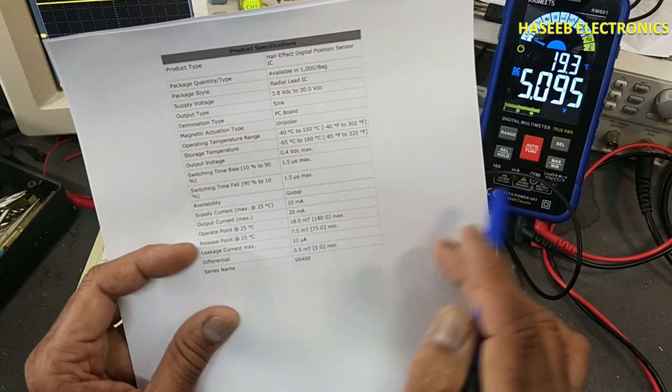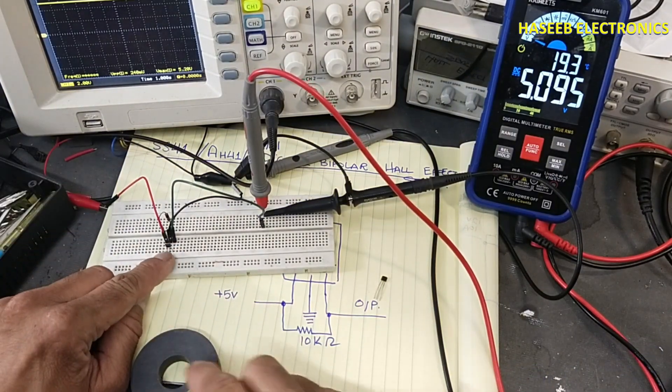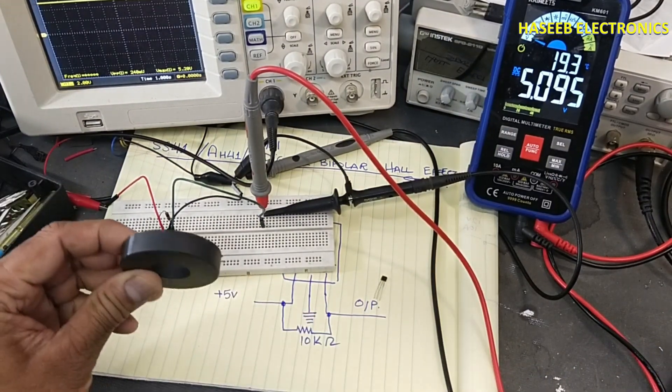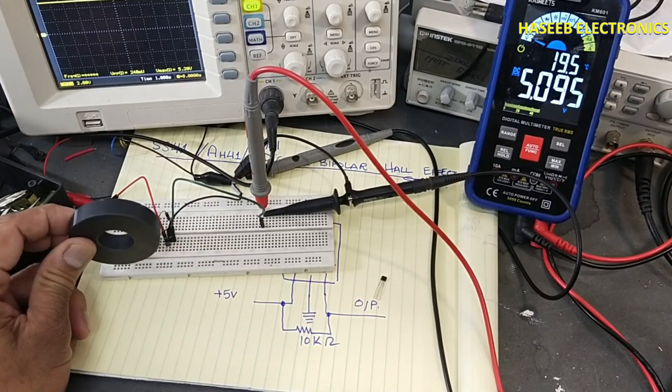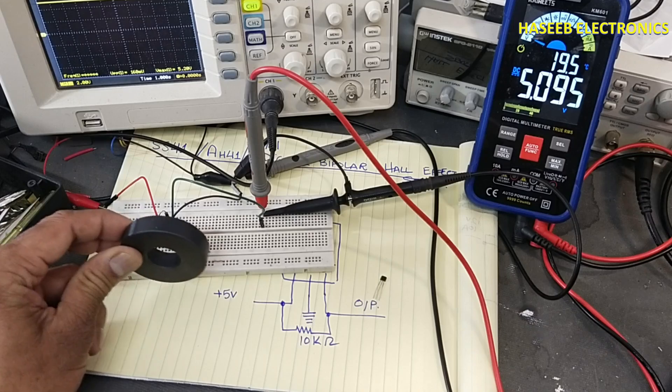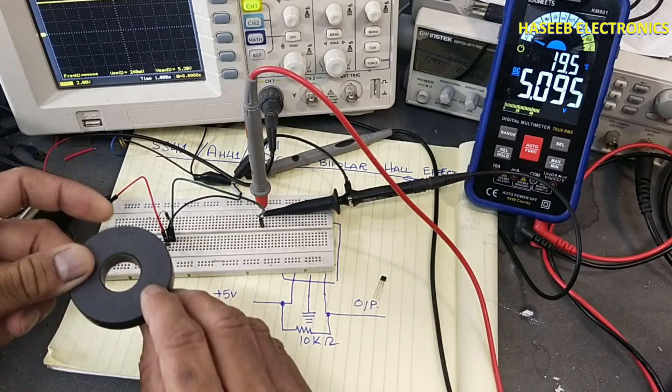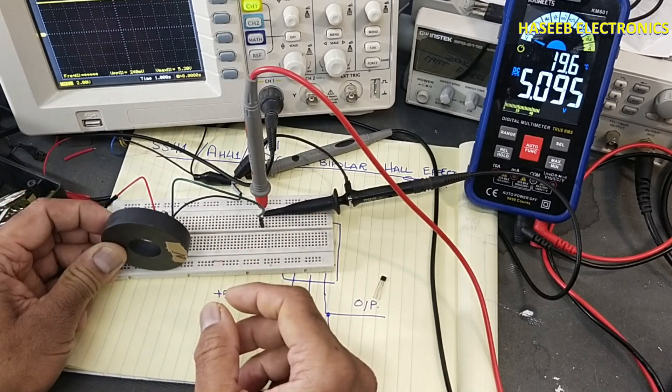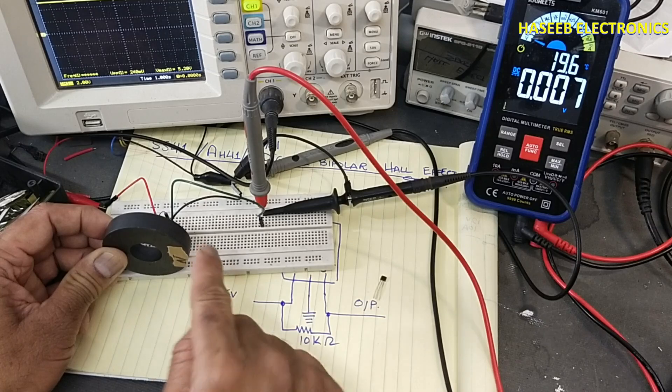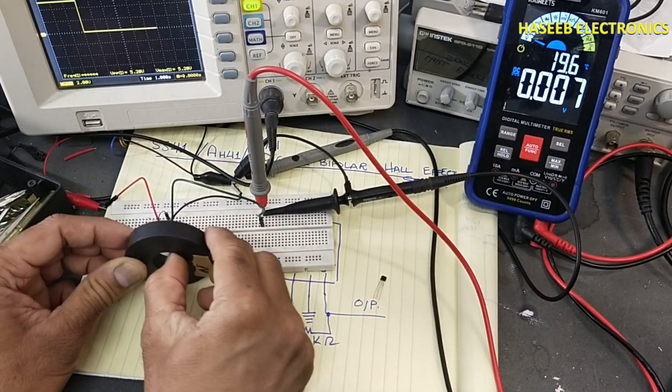Let's check it. I installed it here. If there is north pole in front of this sensor, it will not take any effect from it. If we will bring south pole, when south pole is closer to it, the output is low. When it will go away, the output is low.